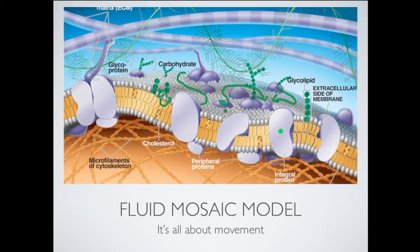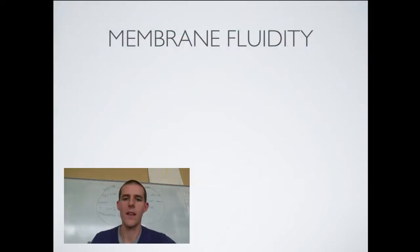So, it is called the fluid mosaic model because one, it's fluid. It is always changing. And mosaic, think of those Italian art pieces that are a bunch of broken up tiles all put together into a nice little picture. Phospholipids is being one type of tile. Our proteins being another type of tile. Cholesterol is being another type of tile and so on and so forth.